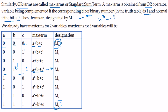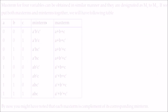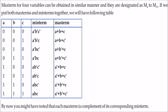Please understand: in minterms, if the bit is 1 we take the variable directly; if it is 0 we take the complement. In maxterms, if the bit is 0 we take the variable directly; if it is 1 we take the complement. For 4 variables, 2 to the power 4 gives 16 maxterms, capital M0 to capital M15.